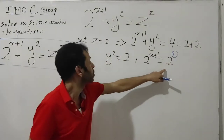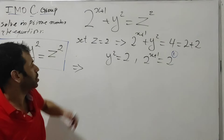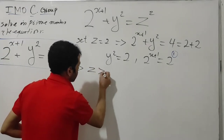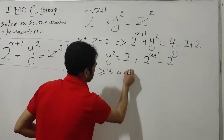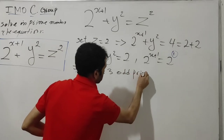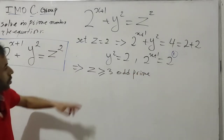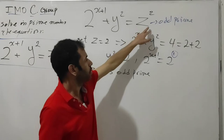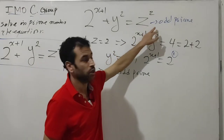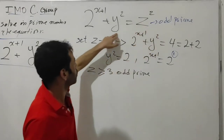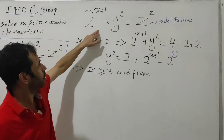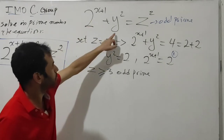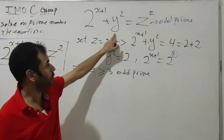Because of this contradiction, z is not equal to 2, so z must be an odd prime. Since the right-hand side is odd, the left-hand side must be odd as well. But 2^(x+1) is even, which means y² must be odd.